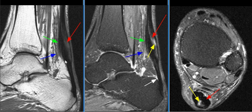There is a trace amount of retrocalcaneal bursitis. The findings are consistent with non-insertional Achilles tendinosis with peritendinitis.